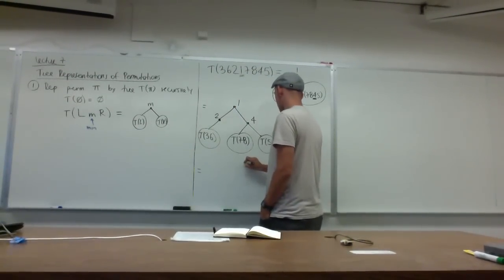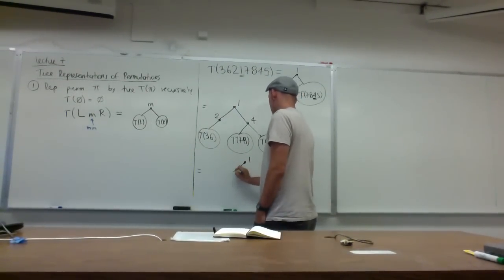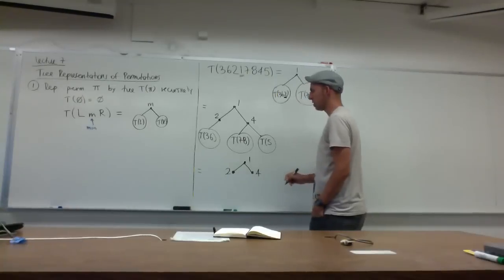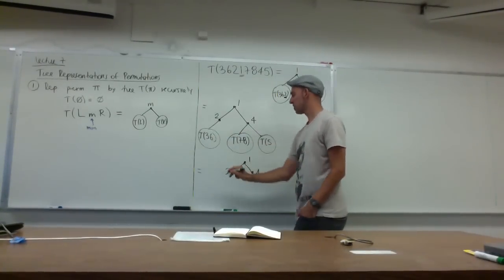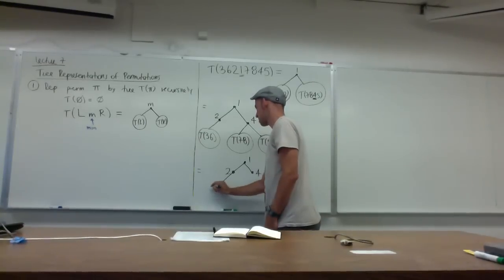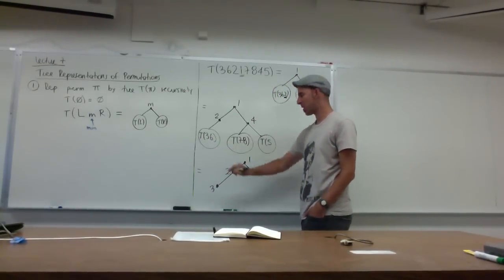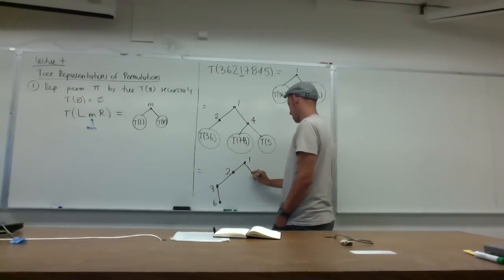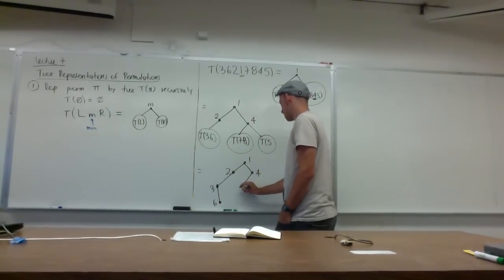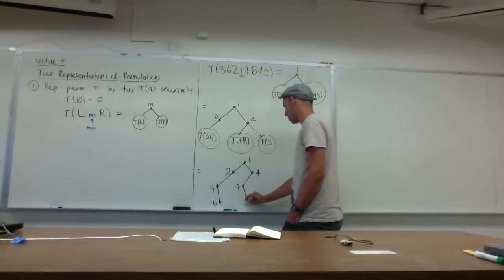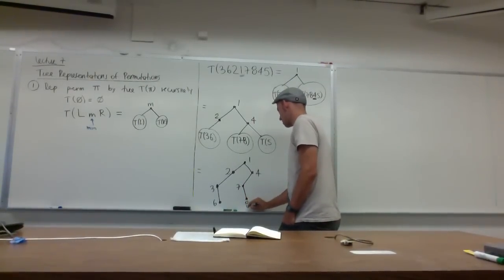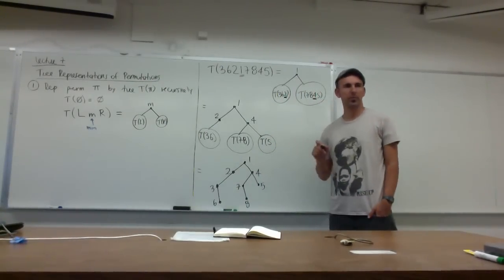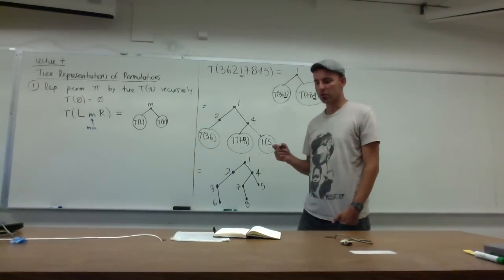Continuing: we get 1 at the root, then 2 on the left branch and 4 on the right. Under 2: the smallest of (3,6) is 3, with 6 hanging to its right. Under 4: the smallest of (7,8) is 7, with 8 to its right; and T(5) gives just a node 5. So the final tree has root 1, left child 2 (with child 3 having right child 6), and right child 4 (with left child 7 having right child 8, and right child 5). This is the tree corresponding to this permutation.